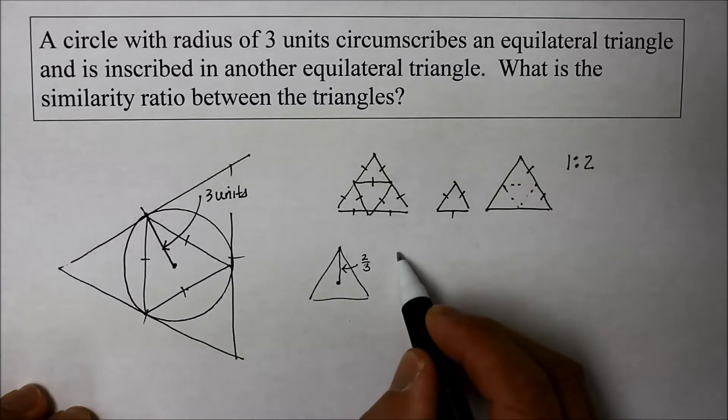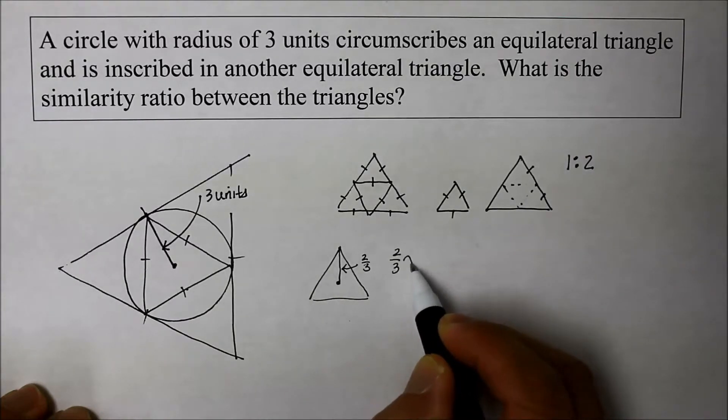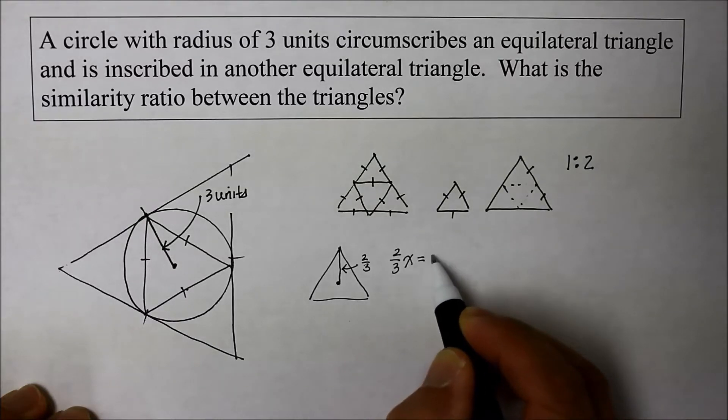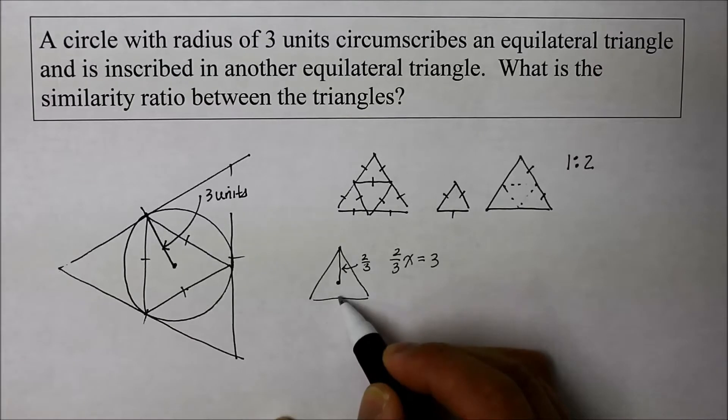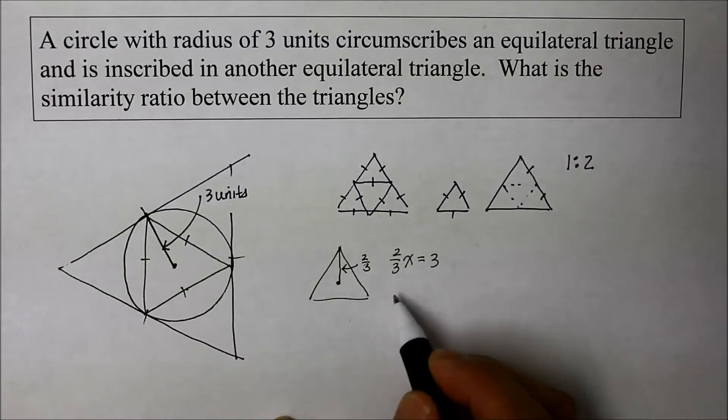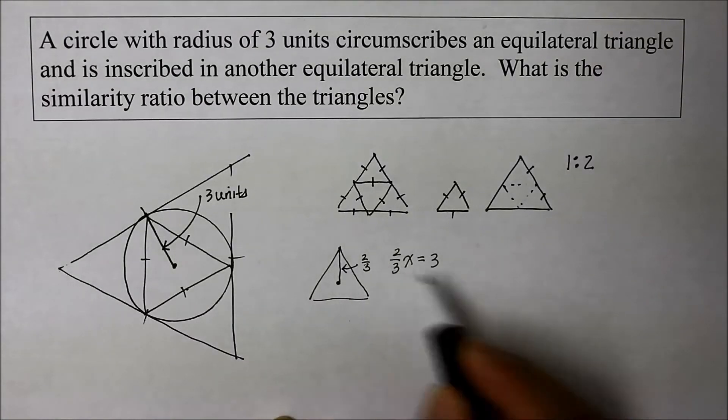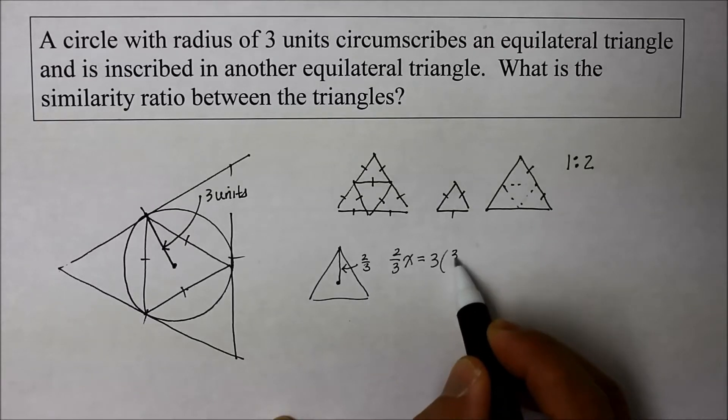So if that's the case, I could say, well, what is two-thirds of a full number that will give me a three? And the x will tell me what the total distance of the height is. So if I solve this one, I'm going to multiply both by the reciprocal three over two. So let's put that over here.